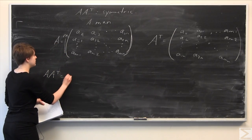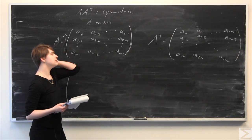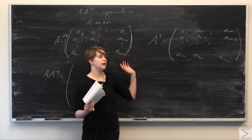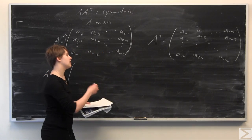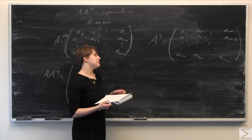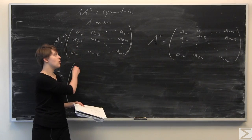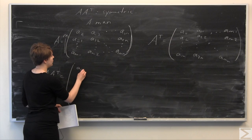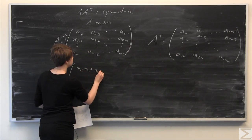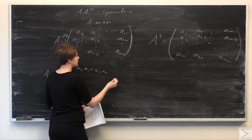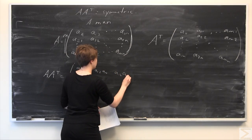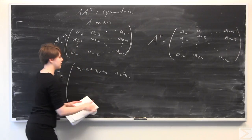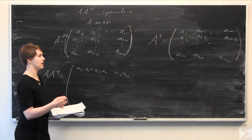For A times A transpose, we do standard matrix multiplication. We have A as m by n and A transpose as n by m, so their product is defined and will be an m by m matrix — a square matrix. To find the first row, first column entry, we multiply that row by that column, giving us A₁₁·A₁₁ + A₁₂·A₁₂ + ... + A₁ₙ·A₁ₙ. This will get messy, so it's much easier to express in summation notation.